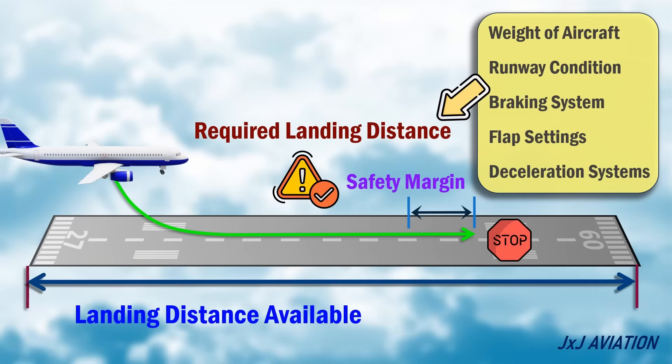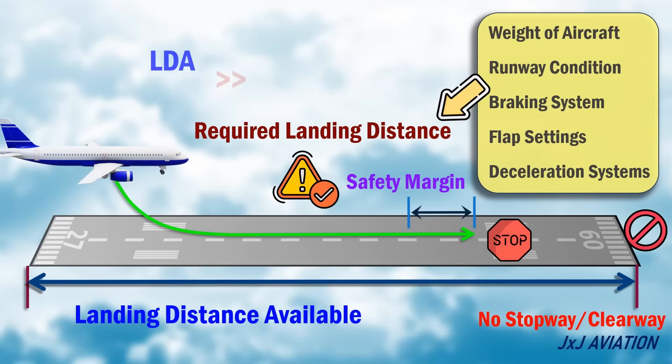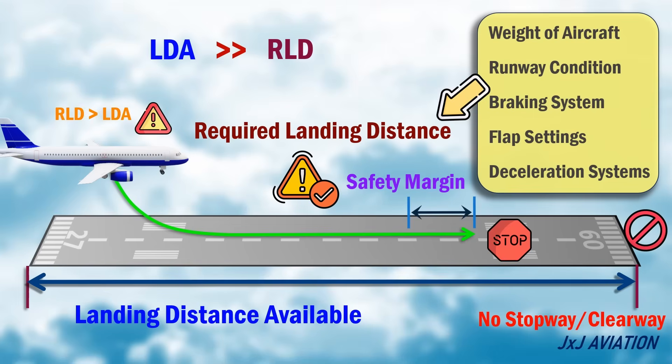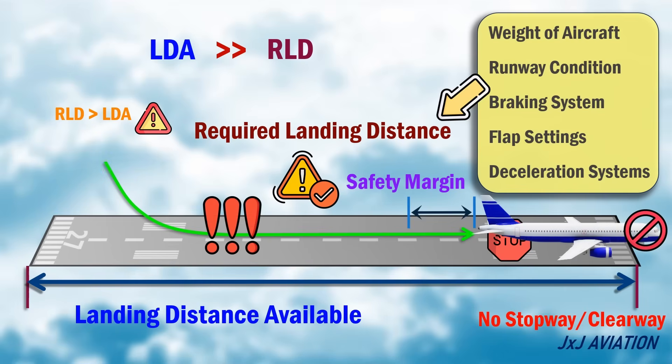This distance does not include the stopway or the clearway, if available. The landing distance available must be more than the required landing distance. If the RLD is longer than the LDA, the aircraft will not be able to stop safely on the runway.